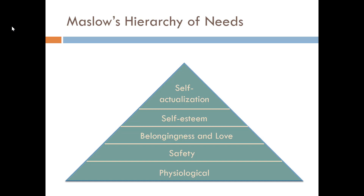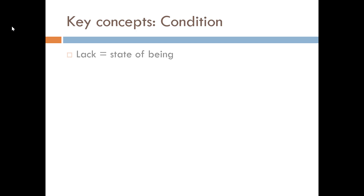These are all needs we have as human beings, but their importance at any given time depends on factors such as culture, wealth, and social status. For example, safety might be a more immediate need for a homeless individual or a child in an abusive home versus someone who has stable housing. The bottom line is these are all needs we have, but their relative importance depends on various factors. So what takes something from a need into a condition? That lack in resources becomes a state of being.